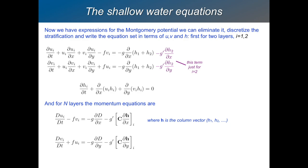To recap: putting those expressions for Montgomery potential gradients into the momentum equations gives us a system with three variables: u, v, and h. Here is the x-momentum equation, the y-momentum equation — indexed by layer number i. For i greater than one you have extra baroclinic internal-mode terms. The continuity equation is the same for every layer: convergence and divergence generate tendencies of layer thickness separately in each layer, since mass is conserved in each layer.